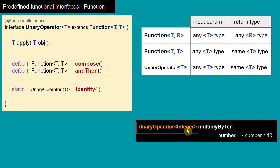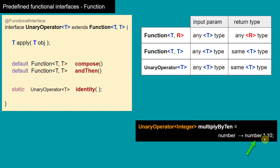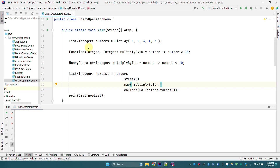The important thing to note is that when we write UnaryOperator<Integer>, it is going to take an input argument of Integer and return the same type — Integer. If you see the lambda implementation, it takes a number and multiplies it by 10, so it takes Integer as input and returns Integer as its return value. Let's see some examples in IntelliJ IDE.